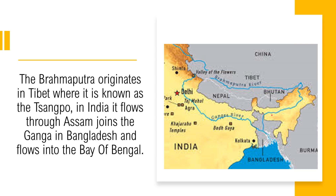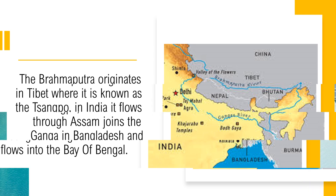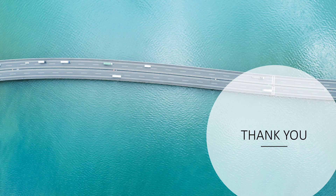The Brahmaputra flows through a major part of the state of Assam before joining the Ganga River in Bangladesh and flowing into the Bay of Bengal. Here we find the largest delta in the world, known as the Sundarbans Delta, which extends both in India and in Bangladesh. I hope you have understood about the extensive plains of Northern India. Thank you.